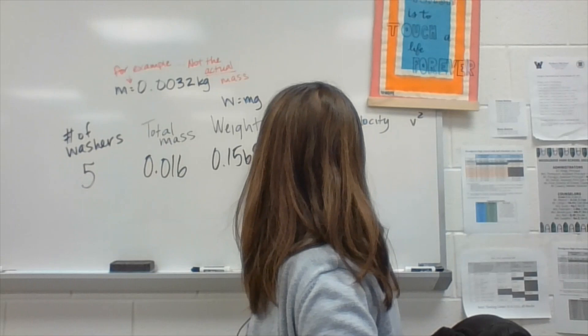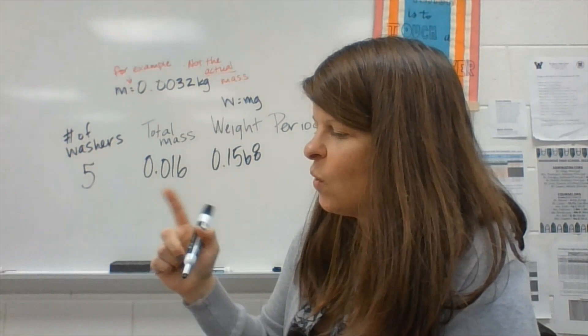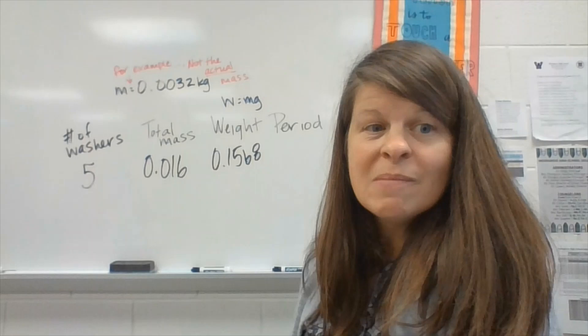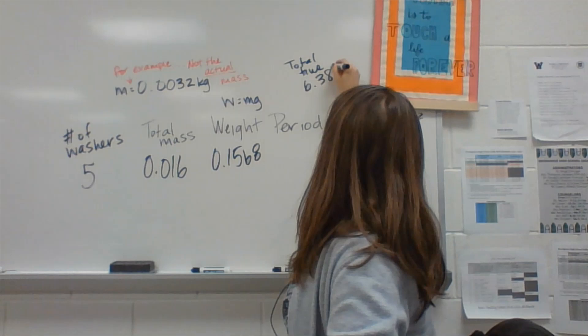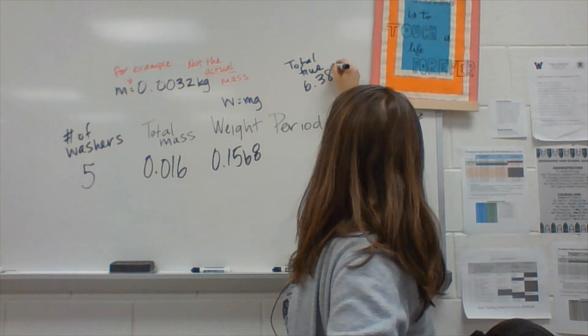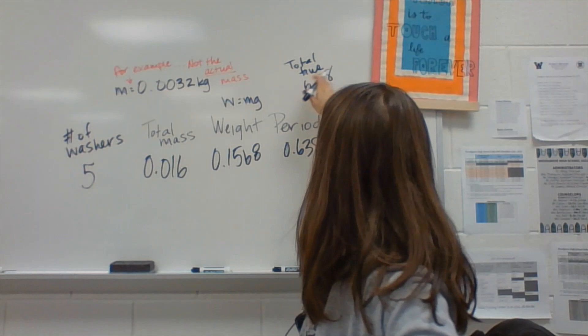This next column is called period. If I go up to the table above, I have the average time for a total of 10 oscillations. By definition, the period is the time it takes for one oscillation. So if I have the total time for 10, I'm going to divide by 10. Let's say my total time was 6.38 — divided by 10 gives me 0.638. So that comes from your average.